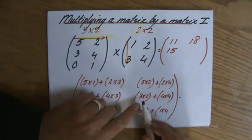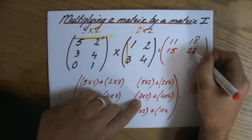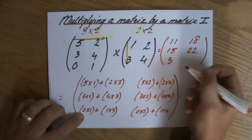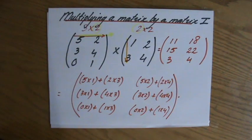Let me speed things up a little bit now. This is 6+16 - that is 22. This is 0+3, which is 3, and 0+4, that is going to be 4.